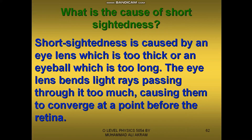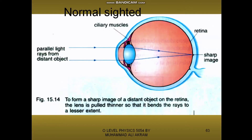What is the cause of short sightedness? Your eye lens is either too thick or the eyeball is too long. The eye lens bends light rays passing through it too much, causing them to converge at a point before the retina. So for a short sighted person, the image is formed before the retina.